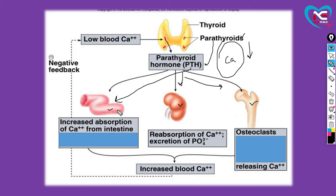Kya function karta hai? Intestine mein yeh intestine ko message karta hai ki tum zyada se zyada calcium ko absorb karna start karo. Jaisi ki hum sab jaante hain ki humari small intestine kya karti hai - zyada se zyada humari useful cheezon ko food se absorb kar leti hai jo digestive food ho raha hota hai. Voha se bahut saari important cheezein absorb karke blood mein bhejtati hai. Usi tarah se calcium jitna bhi absorb karti thi, usse zyada absorb karke blood mein bhejtati hai.